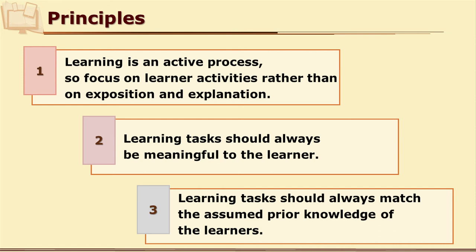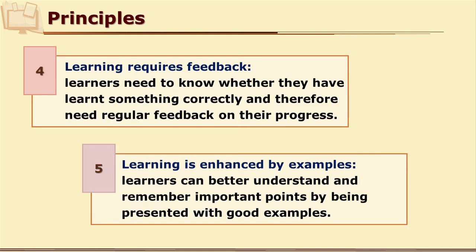The learning task and learning content should be meaningful to learners, relevant to their world, and should match their objectives and goals. They should also match with their previous knowledge. Adult learners wish to know whether what they are doing is correct and whether it is leading towards their goals. So immediate feedback is essential in any ODL material — give them feedback, give them reinforcement, and tell them whether they are on the right path.